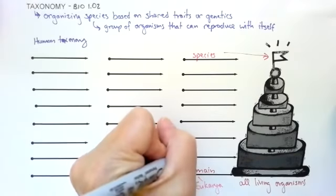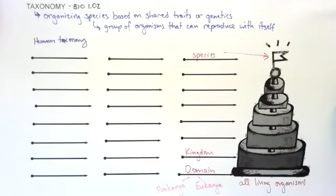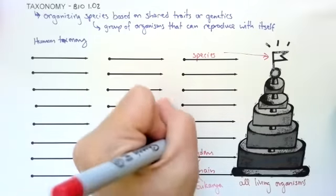We go to kingdom. For example, in eukaryotes, there's four kingdoms. There's plants, there's animals, there's fungus, and there's something called protists. So if we have something that's a eukaryote and that's an animal, we've now cut down about 70% of all the living things on earth.